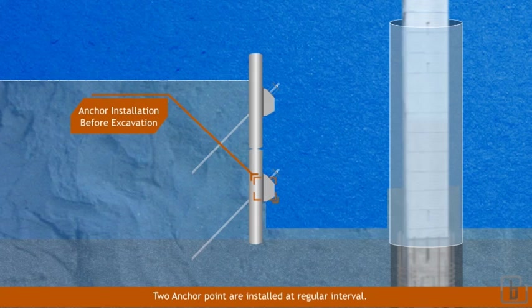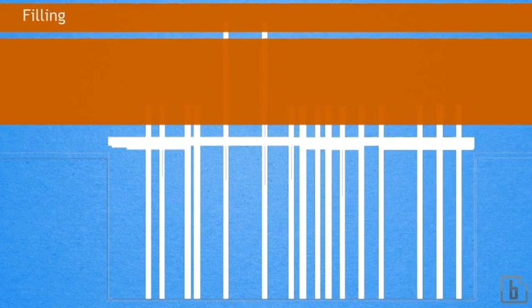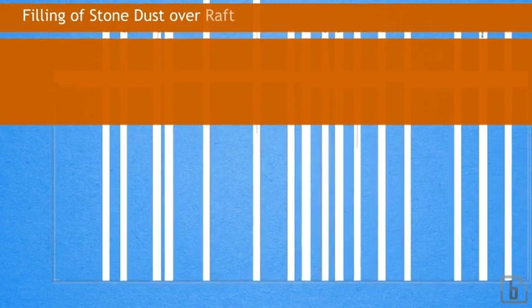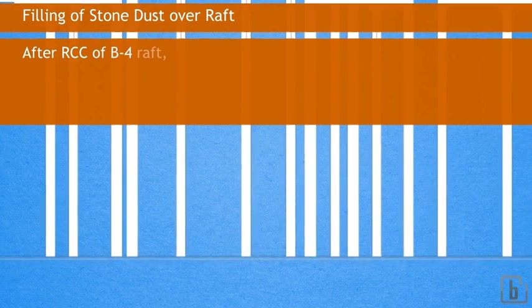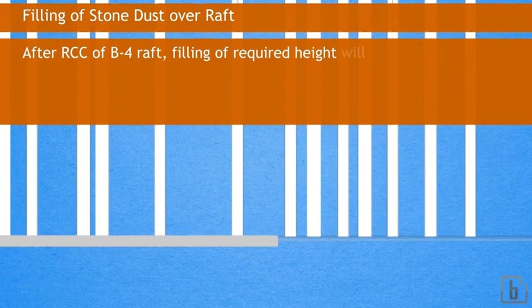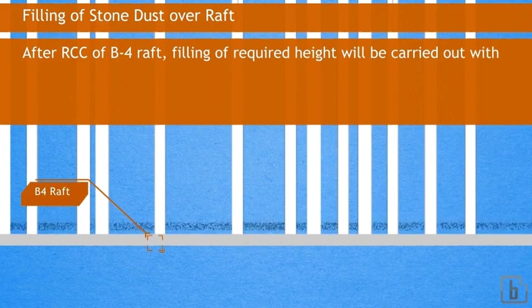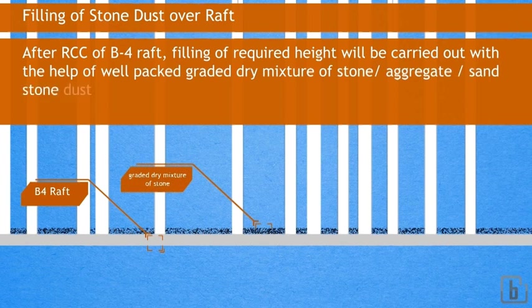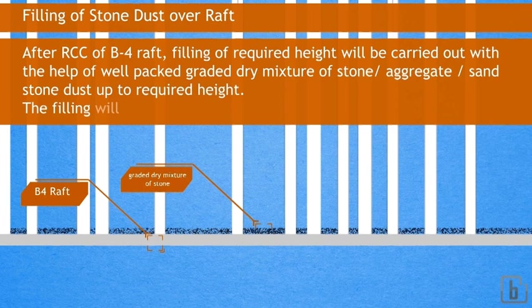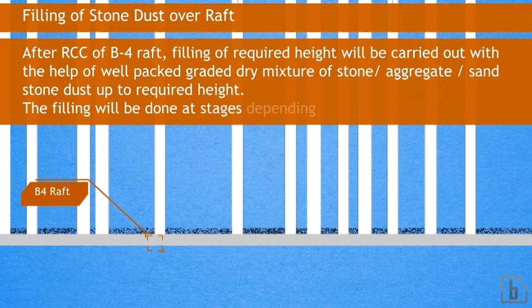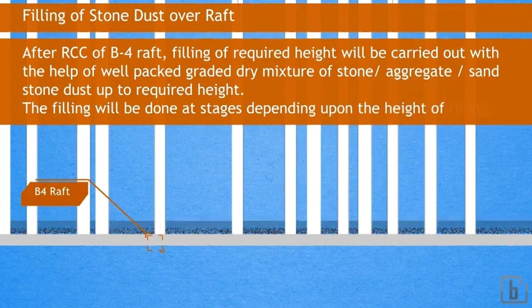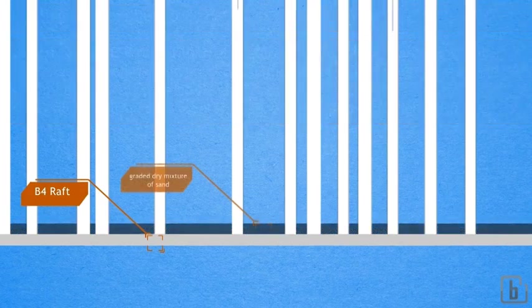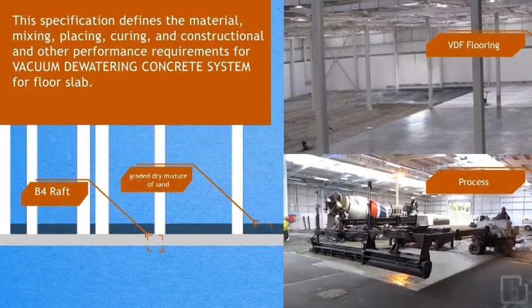The filling of stone dust over raft: After RCC of B4 raft, filling of required height will be carried out with the help of well-packed graded dry mixture of stone aggregate/sand/stone dust up to required height. The filling will be done at stages depending upon the height of filling.